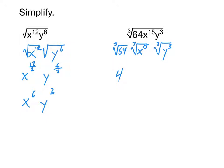So that gives us 4, and now we deal with the variables. Writing out all the work: x to the 15 thirds and y to the 3 thirds. The 4 is just a 4 — it's a number, not an exponent. For the x's: 15 over 3 equals 5, so that becomes x to the 5th. For the y's: 3 over 3 equals 1, and y to the 1 is just y. So the final answer is 4x to the 5th times y.